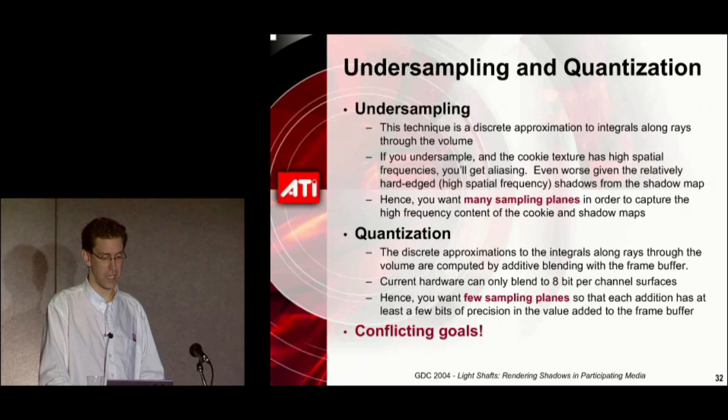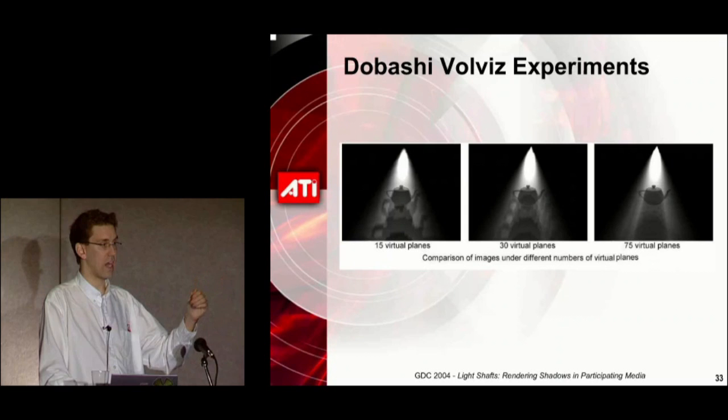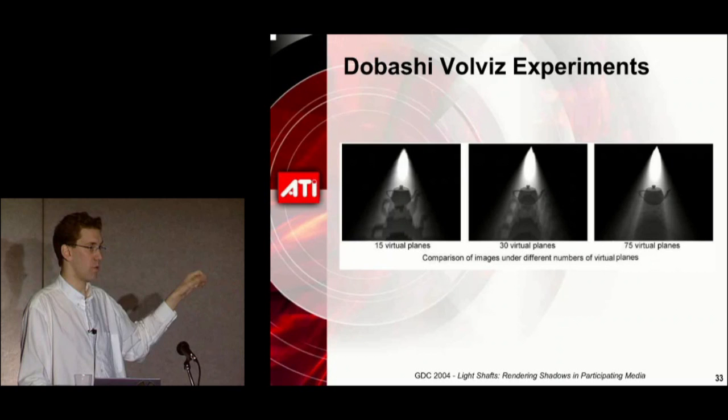In Debashi's paper, they show a figure where on the left they've drawn just 15 planes, then 30, then 75. You can see that because there's a hard shadow edge — a high spatial frequency component — and it's undersampled, you get funny stair-stepping, which is aliasing. As you increase the number of planes and samples, you get a better and better reconstruction.